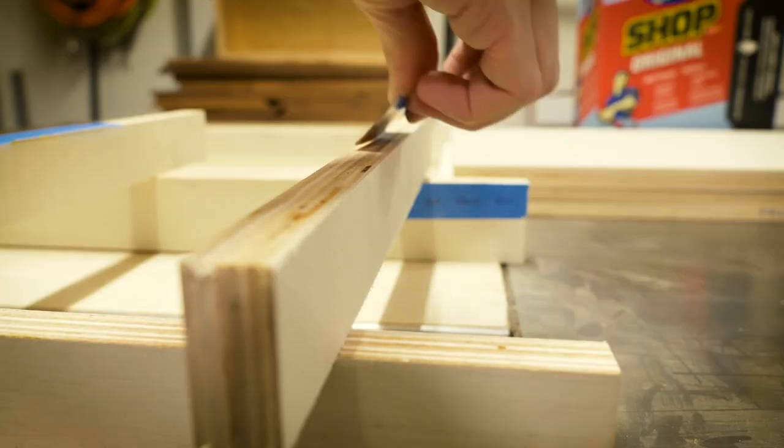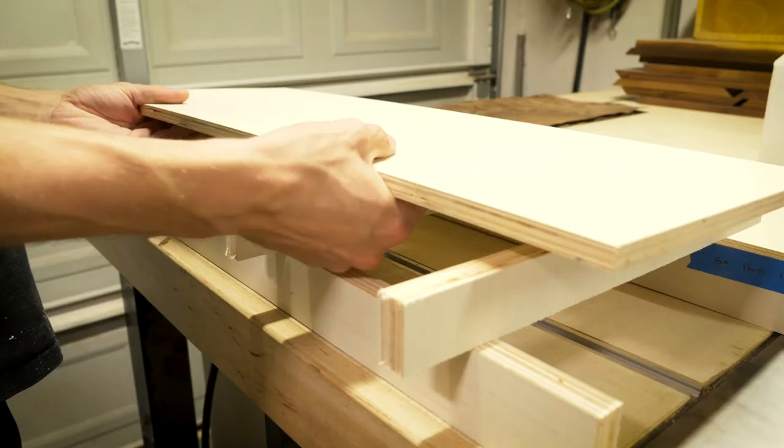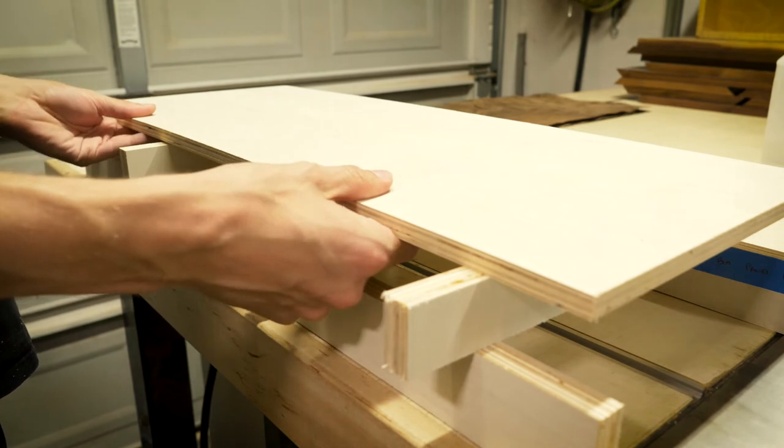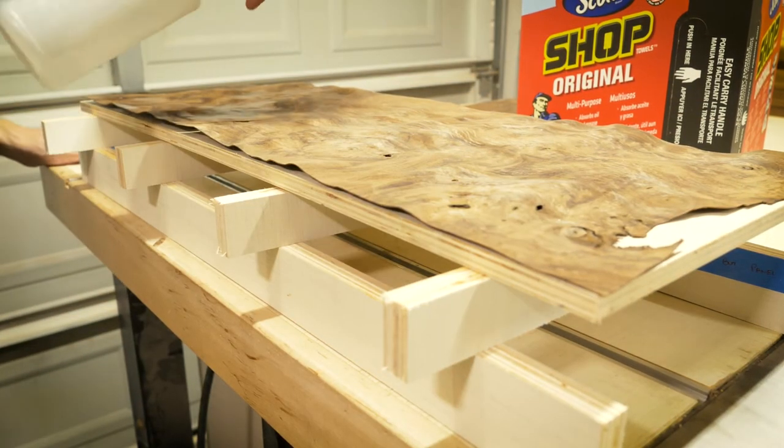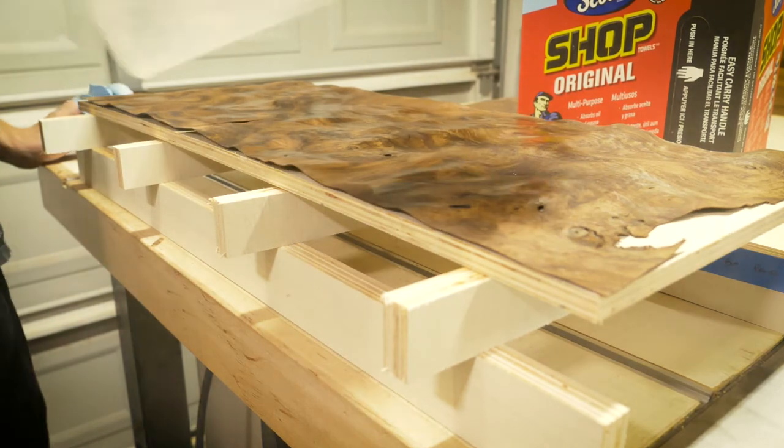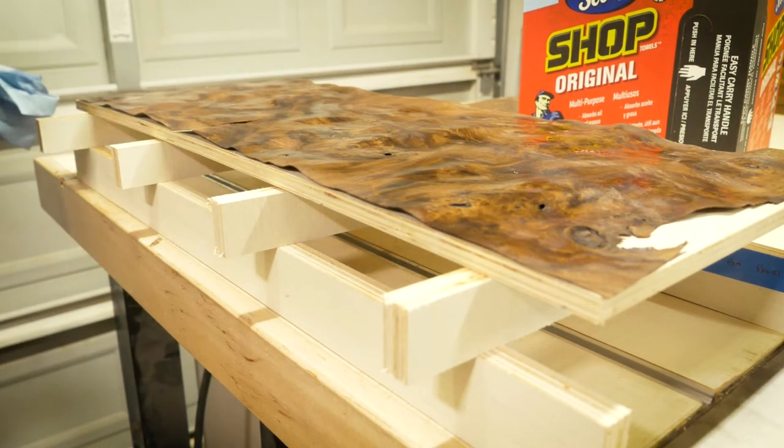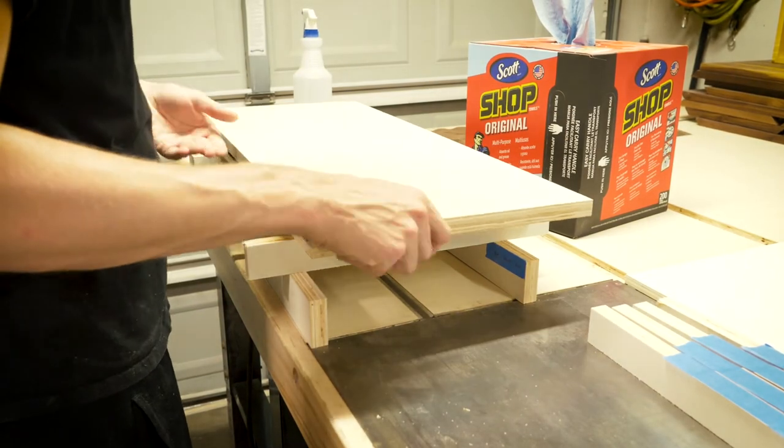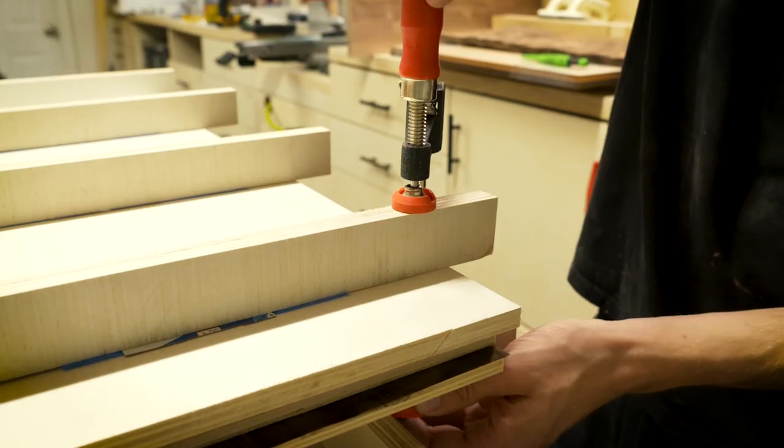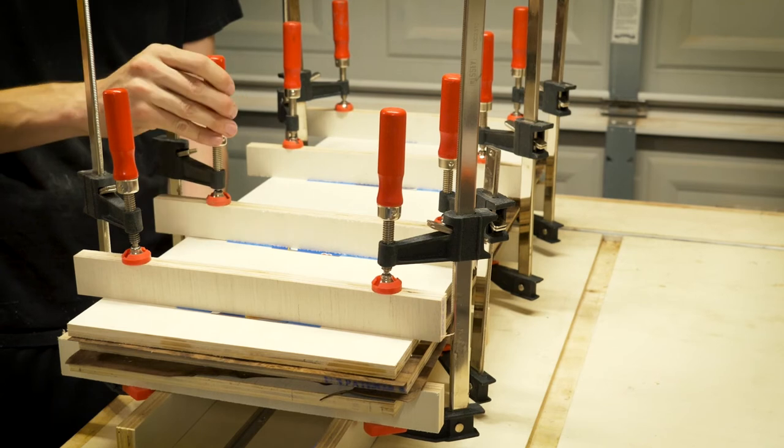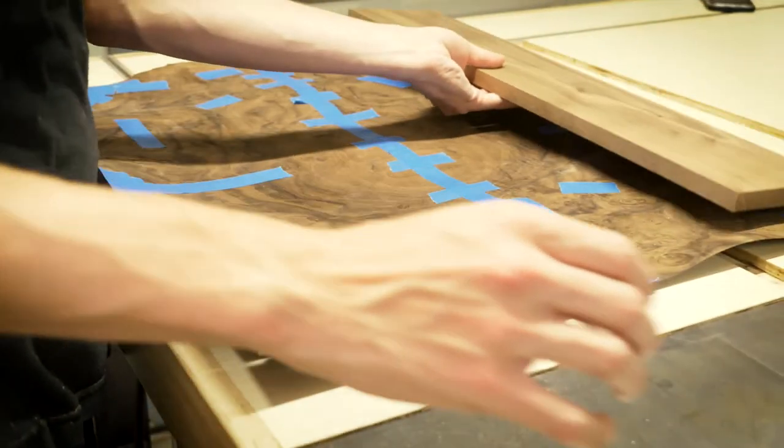The next part of this build was the most nerve wracking and this was working on the drawer fronts. To accomplish these drawer fronts I took some pieces of straight-grained walnut and veneered some burled walnut on top. The theory here is the straight-grained walnut will be very stable over time and won't warp and have issues like this burled walnut could potentially have. Overall this will lead to a more stable drawer front long term.